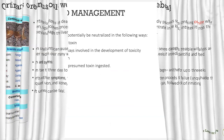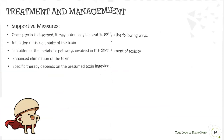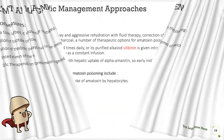Coming to management and supportive measures: once a toxin is absorbed, it may potentially be neutralized by inhibition of tissue uptake of the toxin, inhibition of metabolic pathways involved in the development of toxicity, and enhanced elimination of the toxin. Specific therapy depends on the presumed toxin ingested.